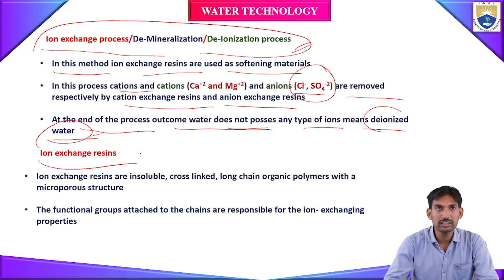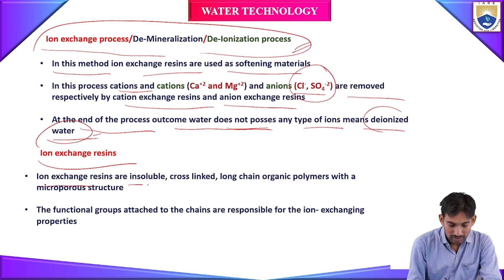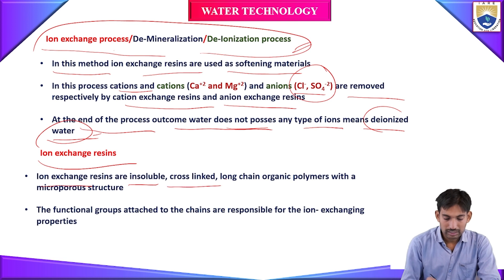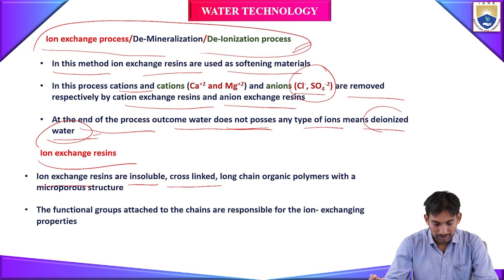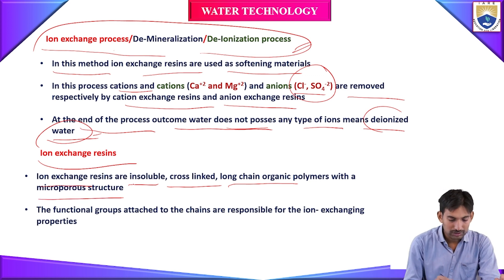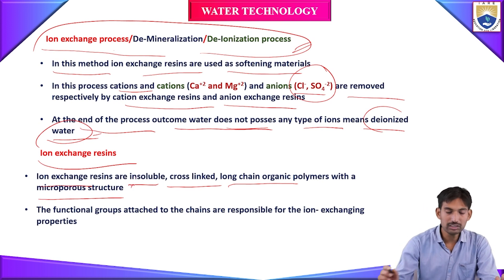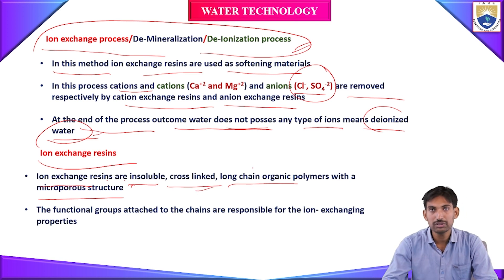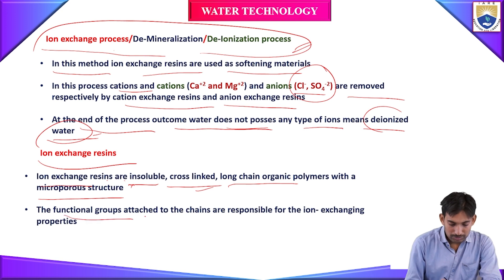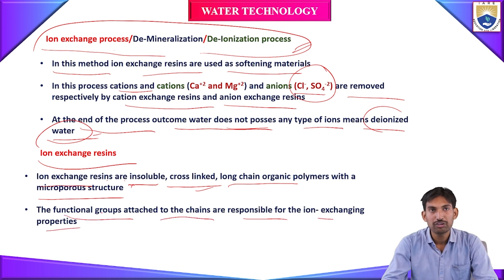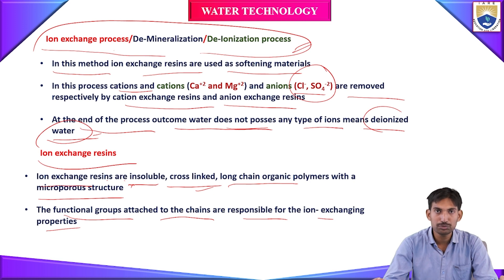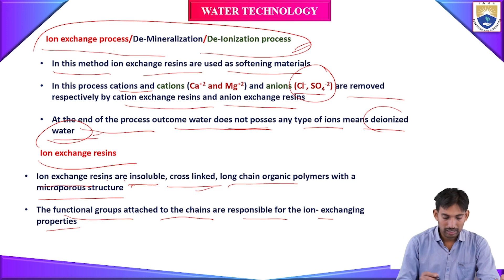Ion exchange resins are insoluble in water and are cross-linked, long-chain organic polymers with microporous structures. These polymers contain micropores on the surface of the resins. The functional groups attached to the chains are responsible for the ion-exchanging properties.